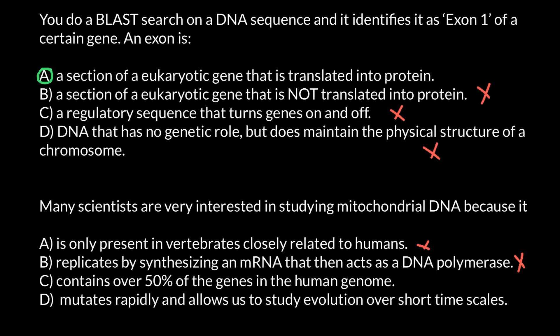Answer B: it replicates by synthesizing a messenger RNA that then acts as a DNA polymerase — also wrong. This is basically a description of what happens when a retrovirus penetrates a cell. Answer C: it contains over 50% of the genes in the human genome — also wrong, because the mitochondrial genome is very small, containing just 37 genes.